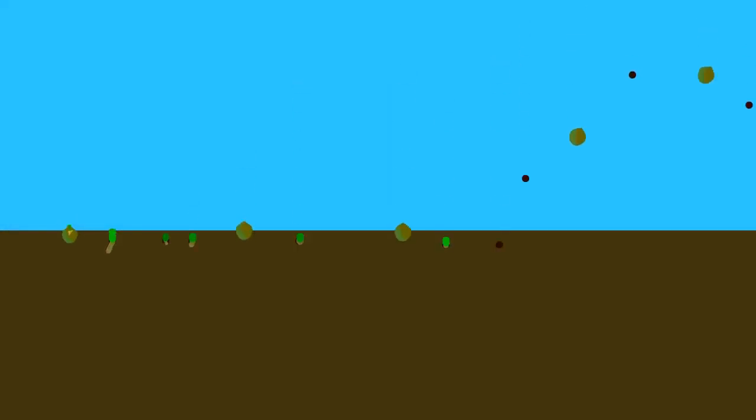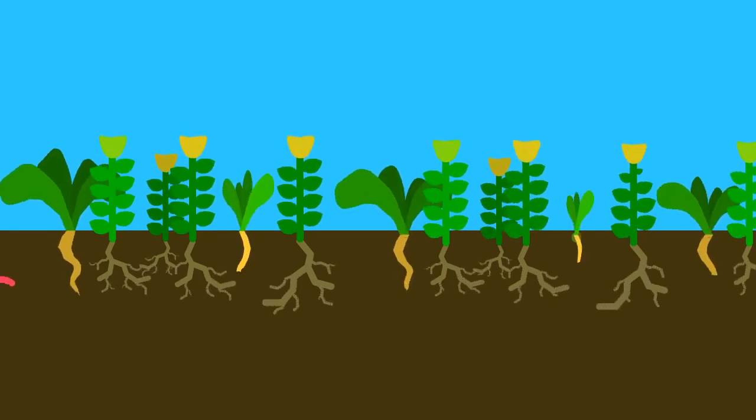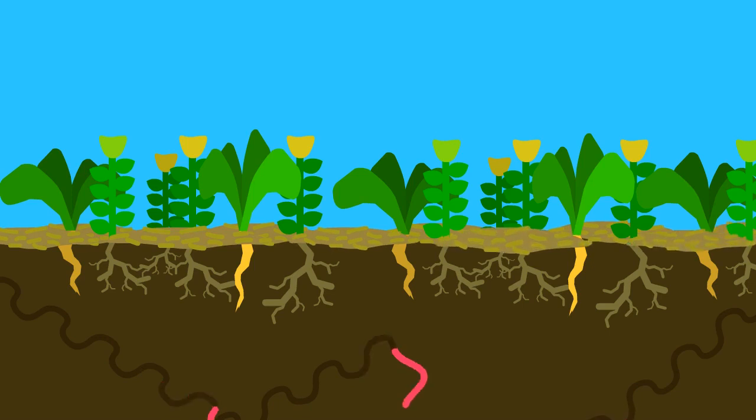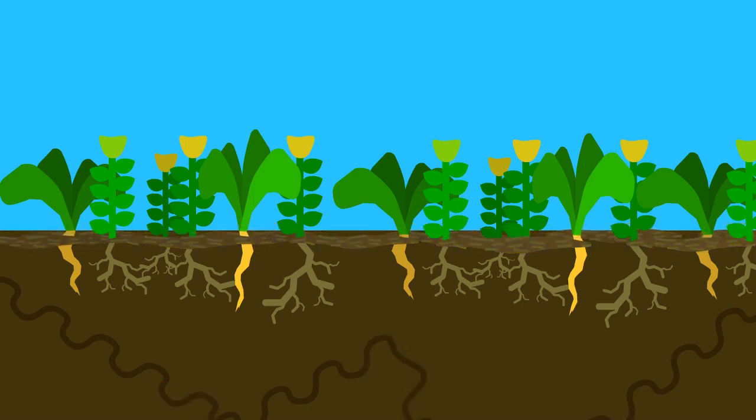Instead of tilling, plant cover crops whose roots break up the soil. Let the worms aerate the soil and bring down nutrients. Keep the soil covered with an organic mulch which will break down over time, adding more organic matter to the soil.